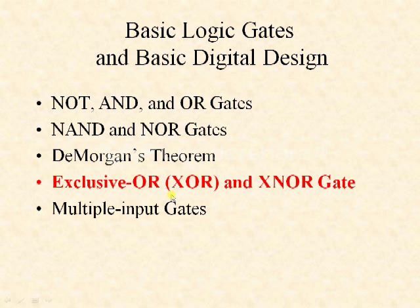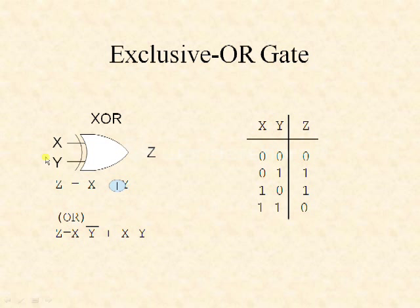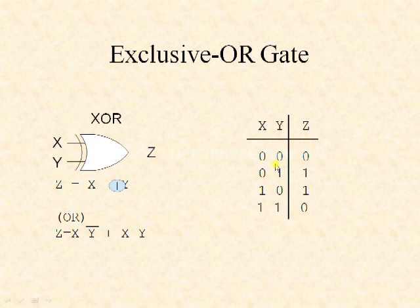Now let us see the XOR gate, also known as the exclusive OR gate. It accepts more than one input and provides only one output. Here is a two-input XOR gate where x and y are the inputs and z is the output. The output expression is z equals x XOR y, which can also be written as z equals x·y complement plus x bar·y. The truth table shows: if all inputs are the same (both 0 or both 1), the output is 0; if any one input differs, the output becomes 1.